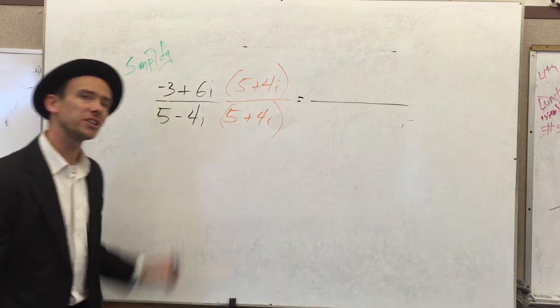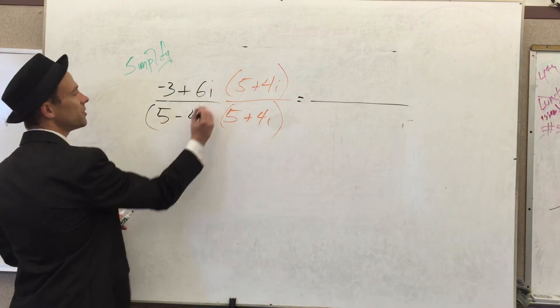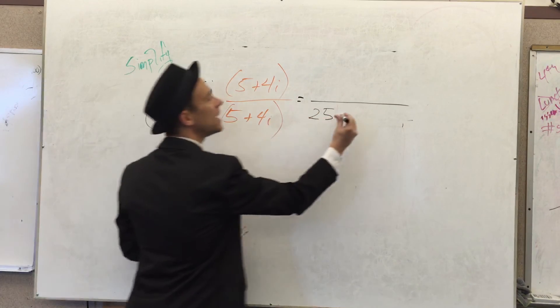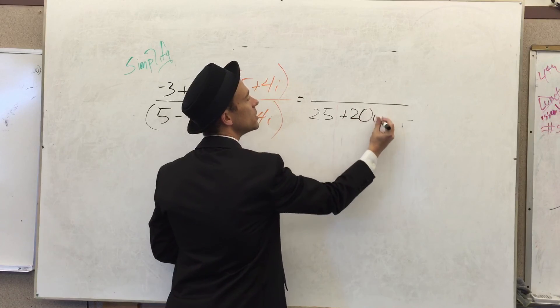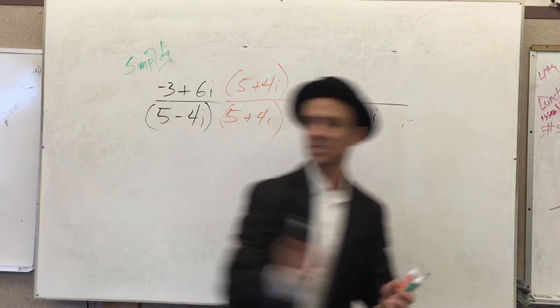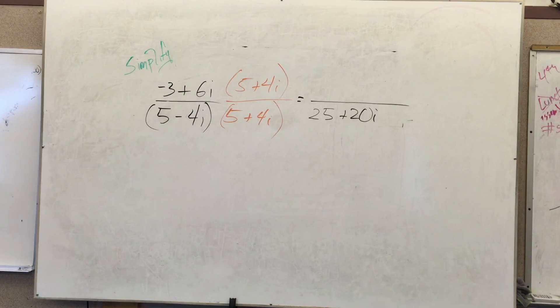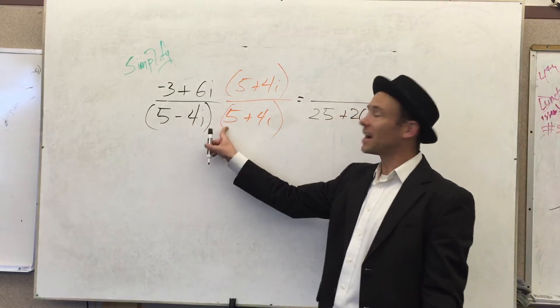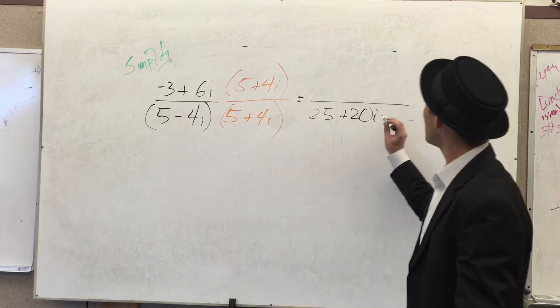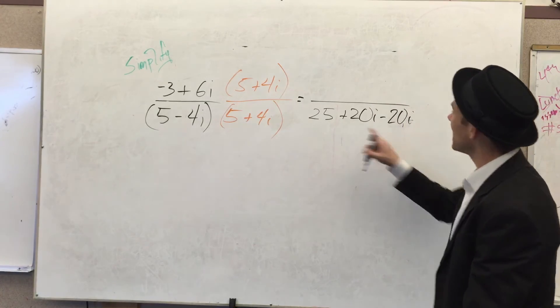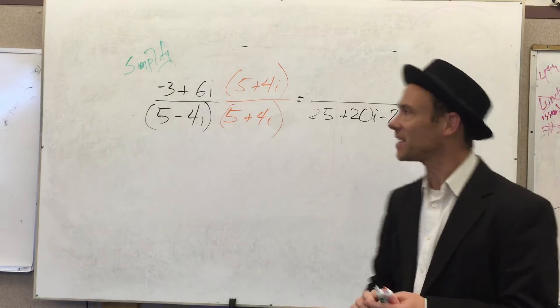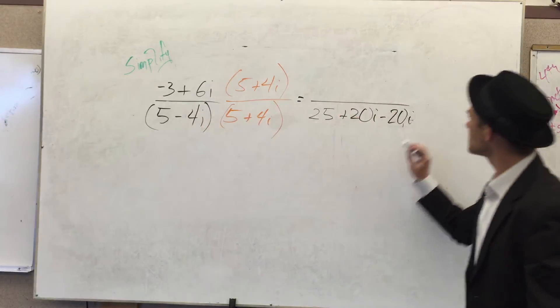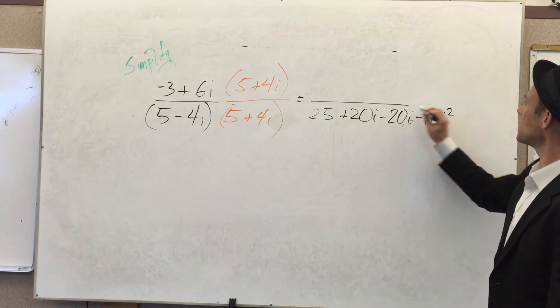Let's multiply. I'm gonna bust a little FOIL in action here. So I'm gonna get 5 times 5 is 25. 5 times 4i is plus 20i. Negative 4i times positive 5i is negative 20i. Hey, they're gonna cancel. Hey, they're gonna go away. Hey, that equals zero. And now I got negative 4 and a positive 4 gives me minus 16 i squared.